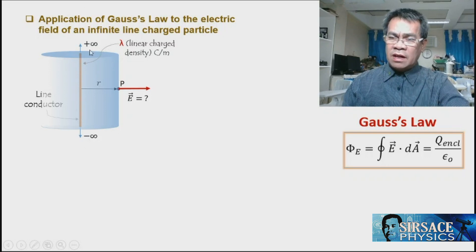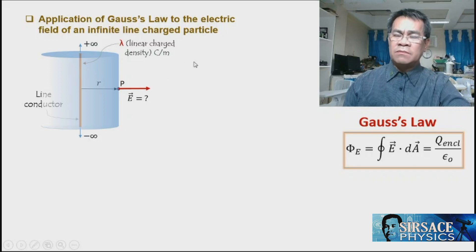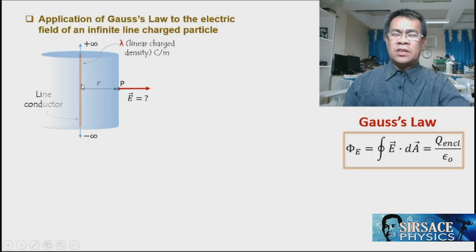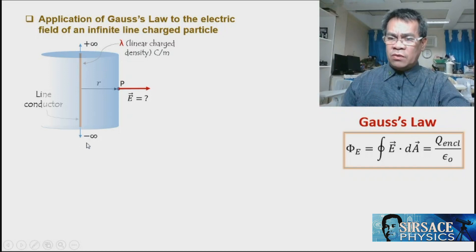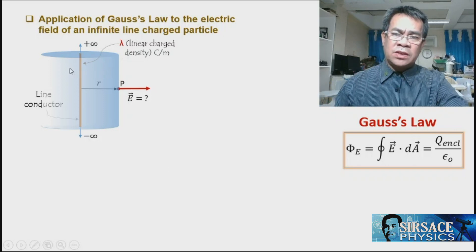The electric field does not pass through the circular end-planes of the cylinder because the electric field points radially outward. Therefore, we can use the cylinder as if enclosing the entire charge, since there is no flux on the top or bottom circular planes. The flux is only on the curved side of the cylinder.